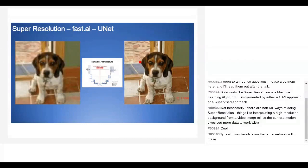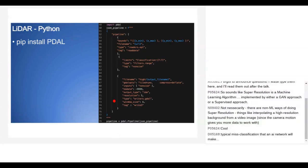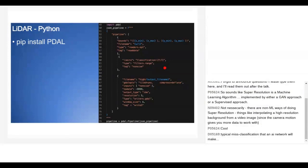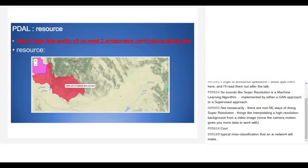I wanted some LiDAR data to train on — high resolution data that I could then downscale to create low-resolution inputs. That avoids having to match different coordinate systems. PDAL is an awesome library. You build pipelines — you give it the bounding box, the URL, and the output filename, and you can put various filters and transformations in between. In this case it removes all dots with classification 7, which is vegetation, leaving just the terrain.